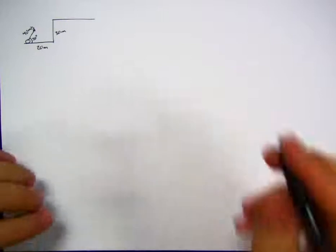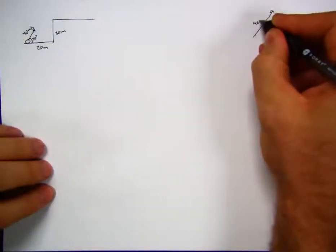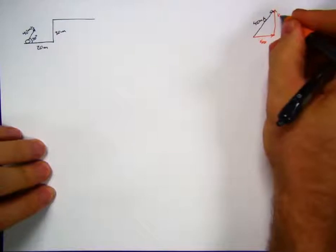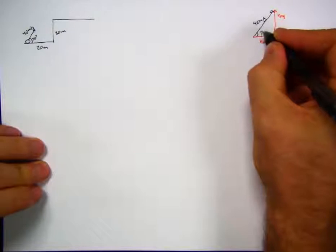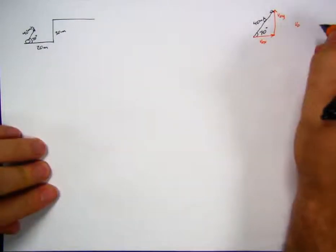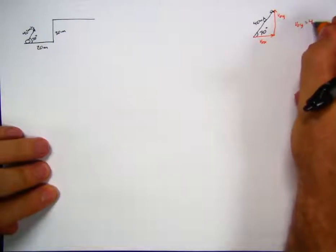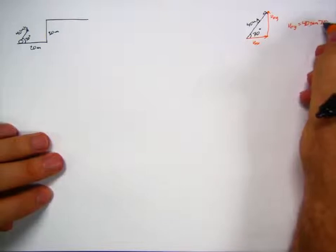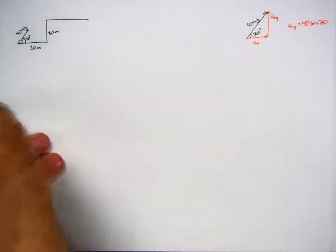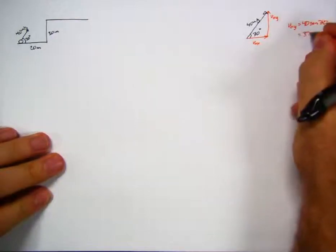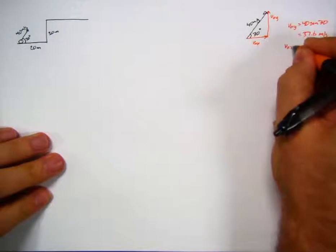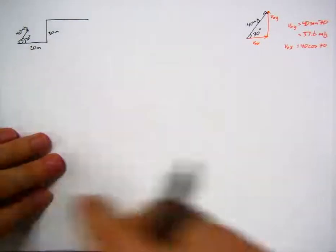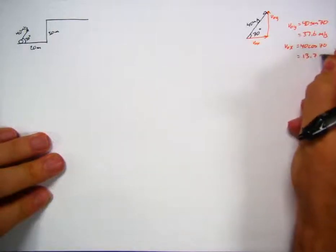Standard projectile setup: 40 meters per second at 70 degrees. We break it into components. v0y = 40 sin(70) = 37.6 meters per second. v0x = 40 cos(70) = 13.7 meters per second.